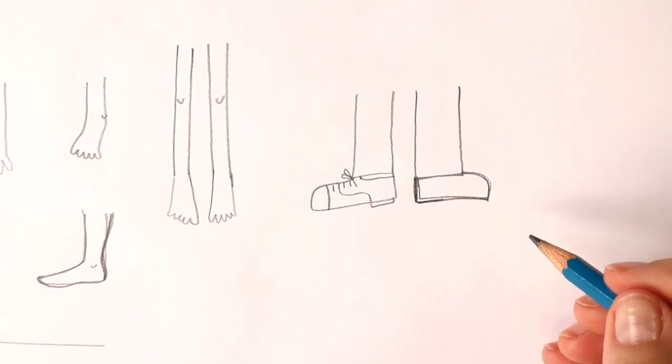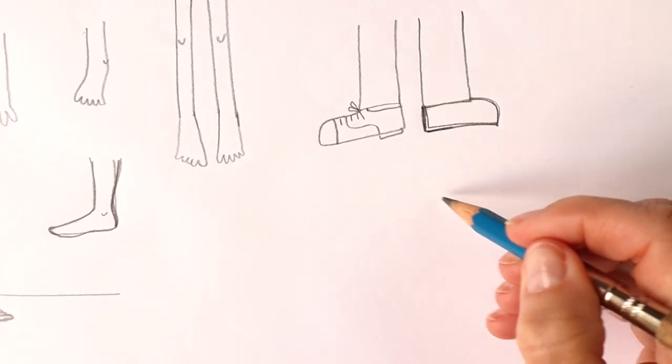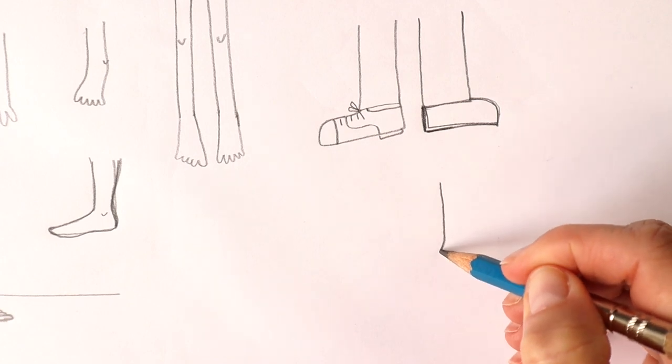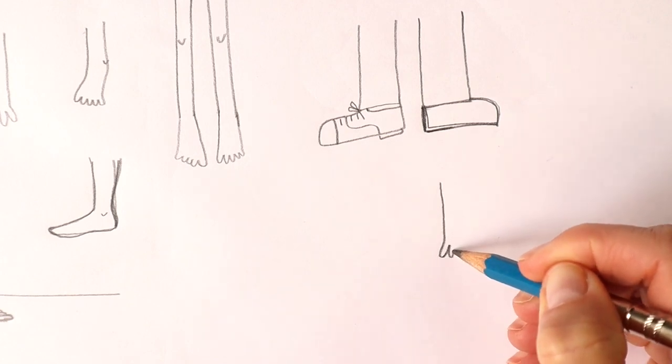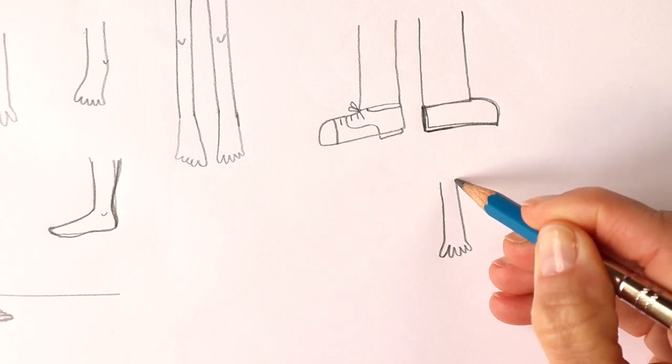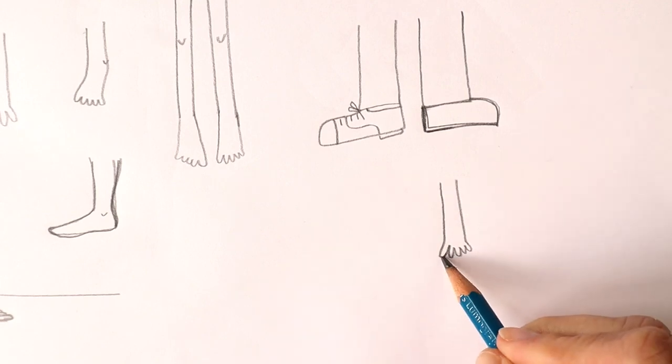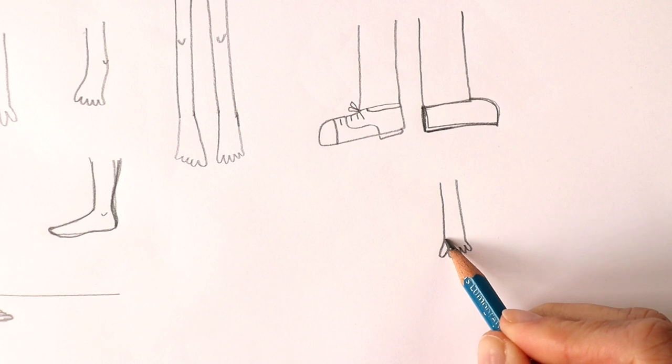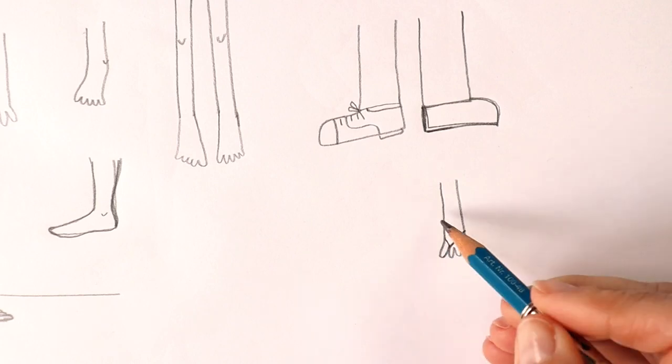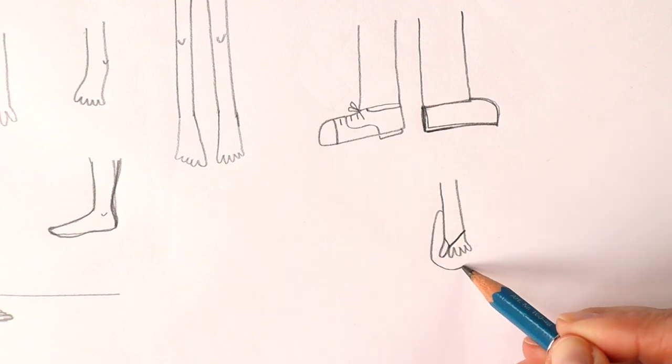And what about if you want to draw a flip-flop? Draw the foot first I would say. So toe, that's the big toe. Two, three, four, five. And then from between the big toe and the next toe, you draw a V shape like that. And then draw the flip-flop around the foot.